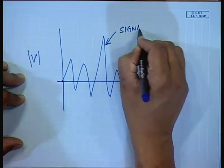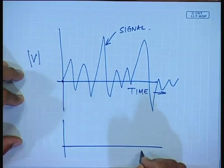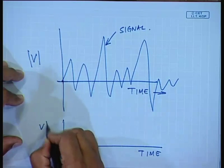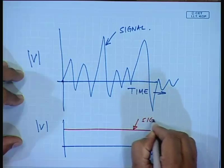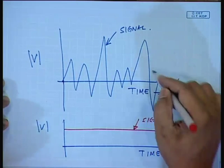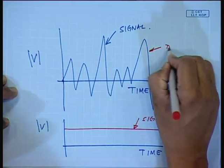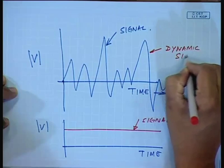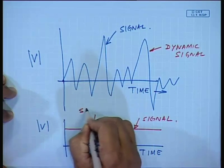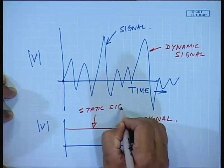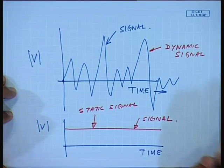I have drawn the signal as varying with time, but the signal could also be at a constant level as a function of time. Looking at these two signals — the blue one and the red one — one is changing with time, which is known as a dynamic signal, while the constant one is a static signal. So signals can be classified according to their nature as a function of time: one is a dynamic signal, another is a static signal.